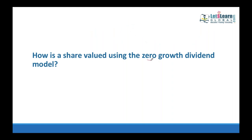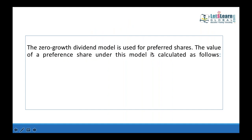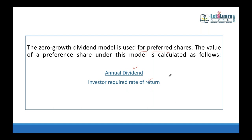Zero growth model is used for preference shares because dividend is fixed. The formula: value equals fixed annual dividend divided by investor's required rate of return. Multiply by 100 to get a dollar amount. For common shareholders, there is a growth in dividend. For example, current dividend is $3 with a constant promised growth rate of 5%.